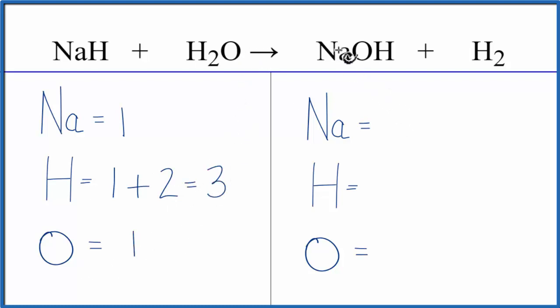On the product side of the equation, we have one sodium, one hydrogen plus we have these two here, so we have three hydrogens, and then just one oxygen.